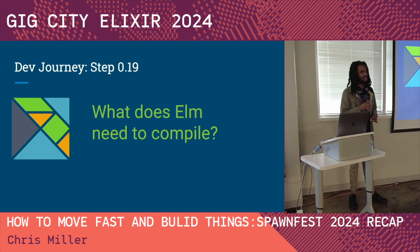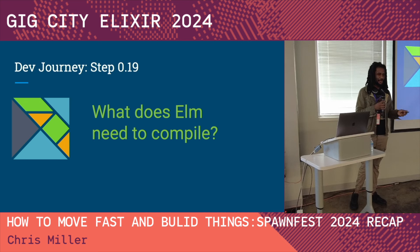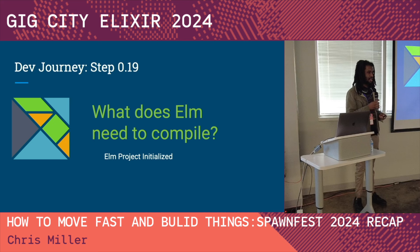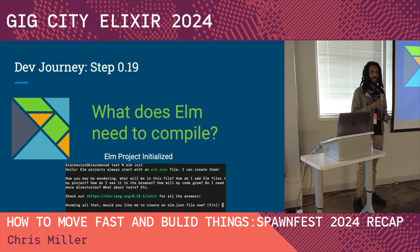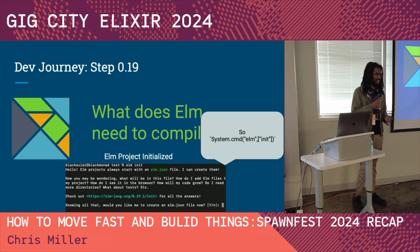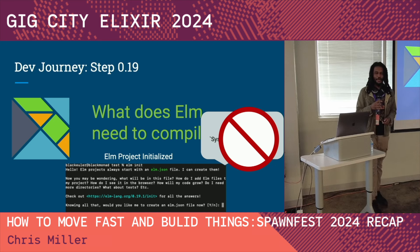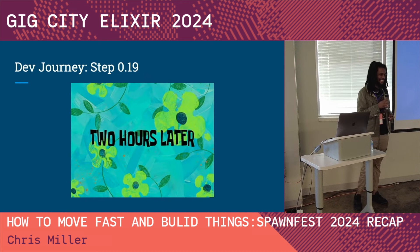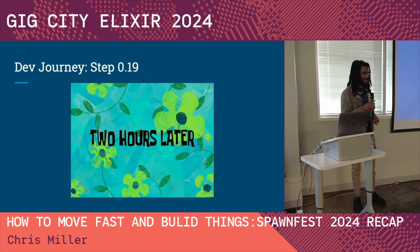For the Elm interaction, we thought we'd just call an Elm binary and run it using System.cmd — that should be easy, right? When we worked through the system command we realized it's not as easy as just doing `elm make` or `elm compile`. We actually need to set up the dev environment for compiling and writing Elm code. The first thing Elm needs is an Elm project initialized, which you do by typing `elm init` in your terminal. We thought that would just be a system command — wrong.